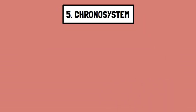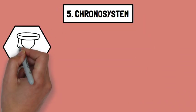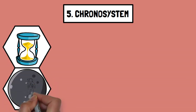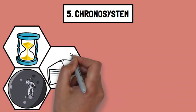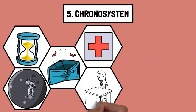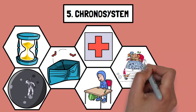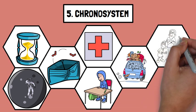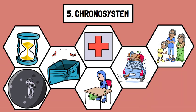And number five: Chronosystem. This system refers to the dimension of time, including historical events and changes over the lifespan. For instance, a child growing up during a major economic recession or a pandemic might experience different developmental challenges compared to a child growing up in a time of economic prosperity and health. A family going through a major life change like relocating to a new country can also face developmental challenges related to adjusting to new cultural norms and social environments.